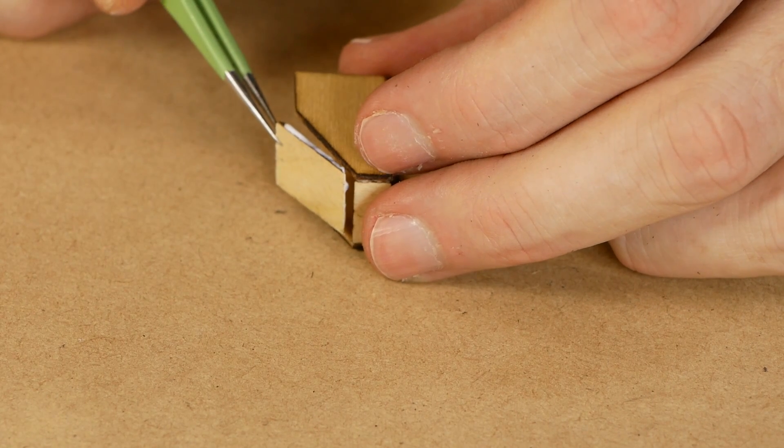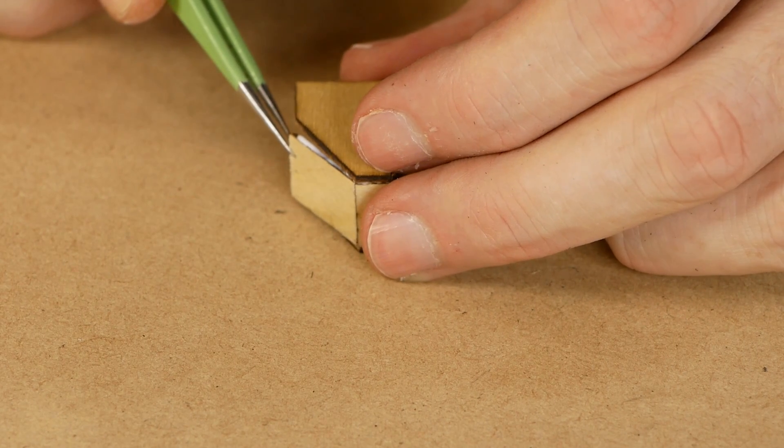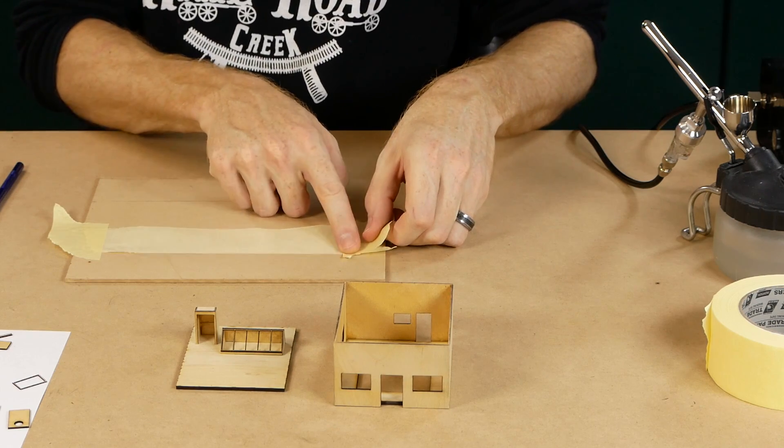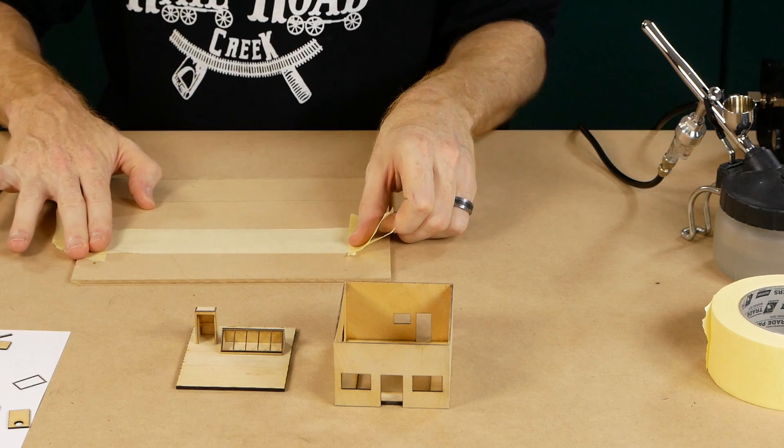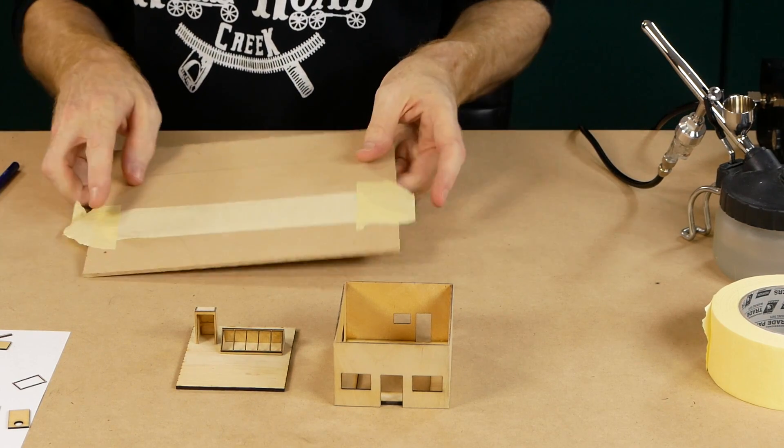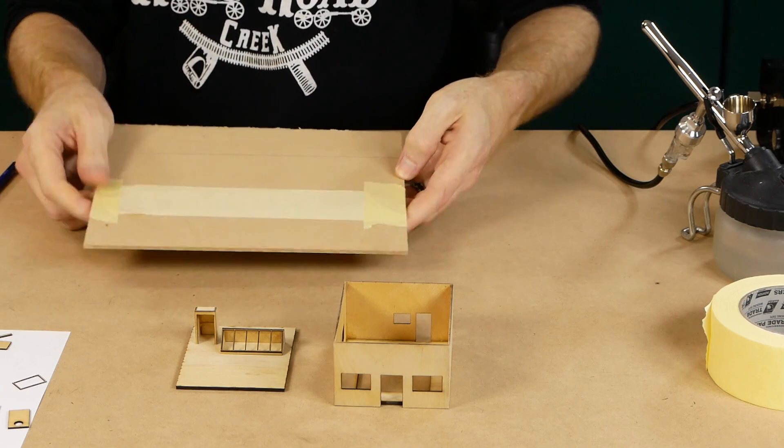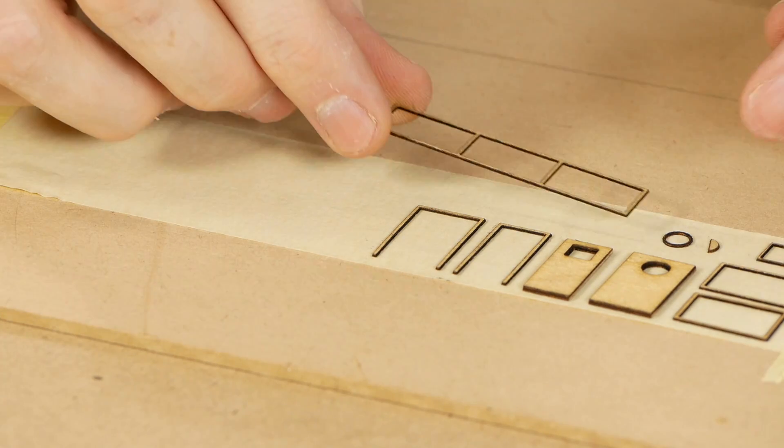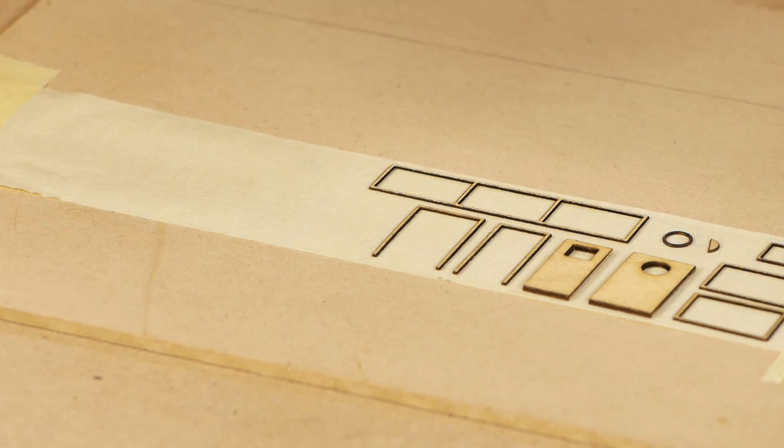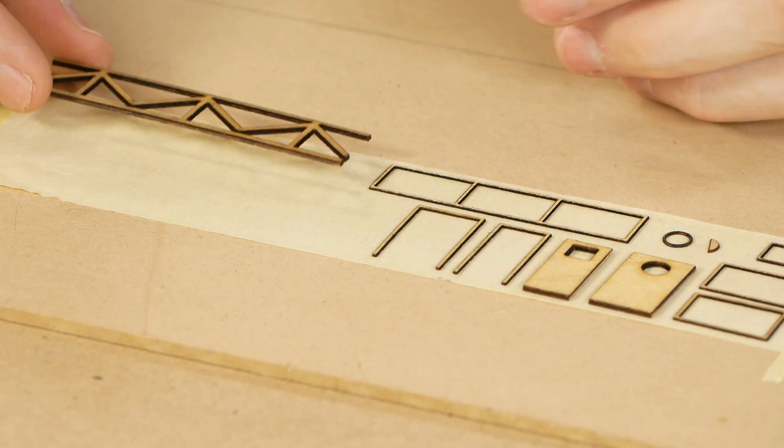When it comes to painting I usually use the airbrush. The only problem is small pieces will fly away if not secured. To secure these small pieces for painting I use some masking tape with the sticky side facing up. Just make sure it's not too sticky because we don't want to break the small parts trying to remove them from the tape.